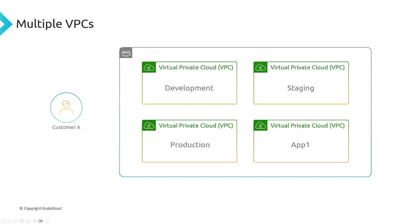The point is that VPCs do help customers segment their cloud infrastructure from other customers, but on top of that, they also help you segment within your own organization. You could break it out so that your development team gets their own VPC and your finance team gets their own VPC. You have a lot of flexibility, and AWS has designed it so you can architect your cloud environment any way you'd like.